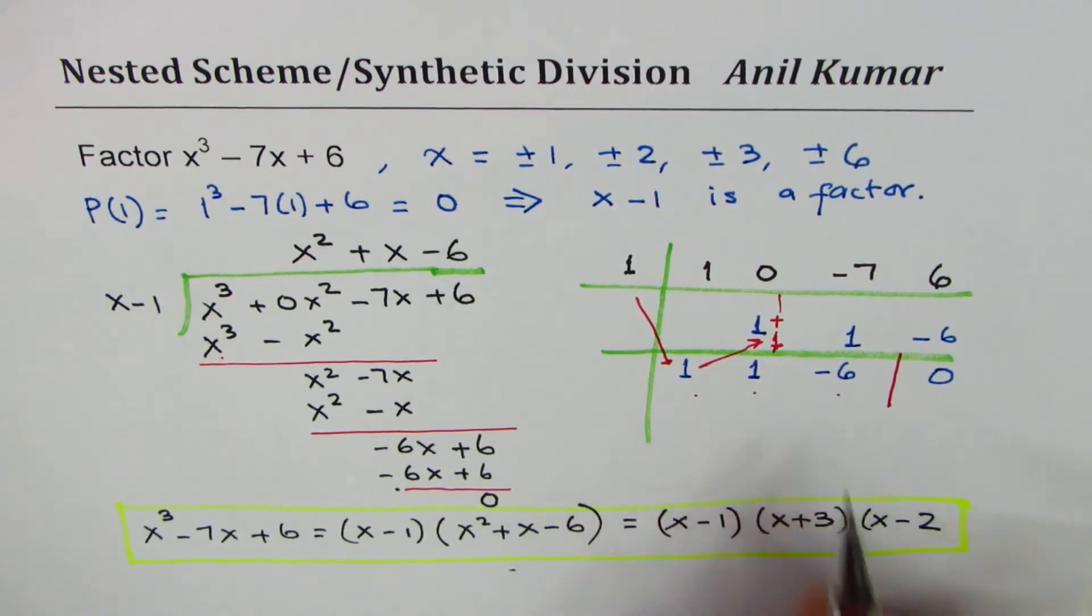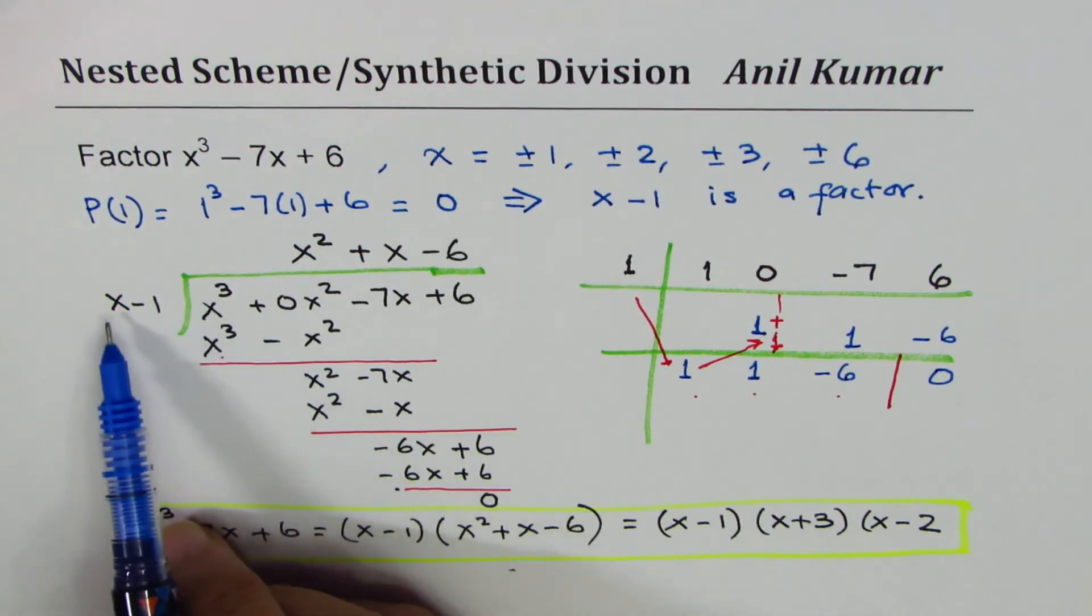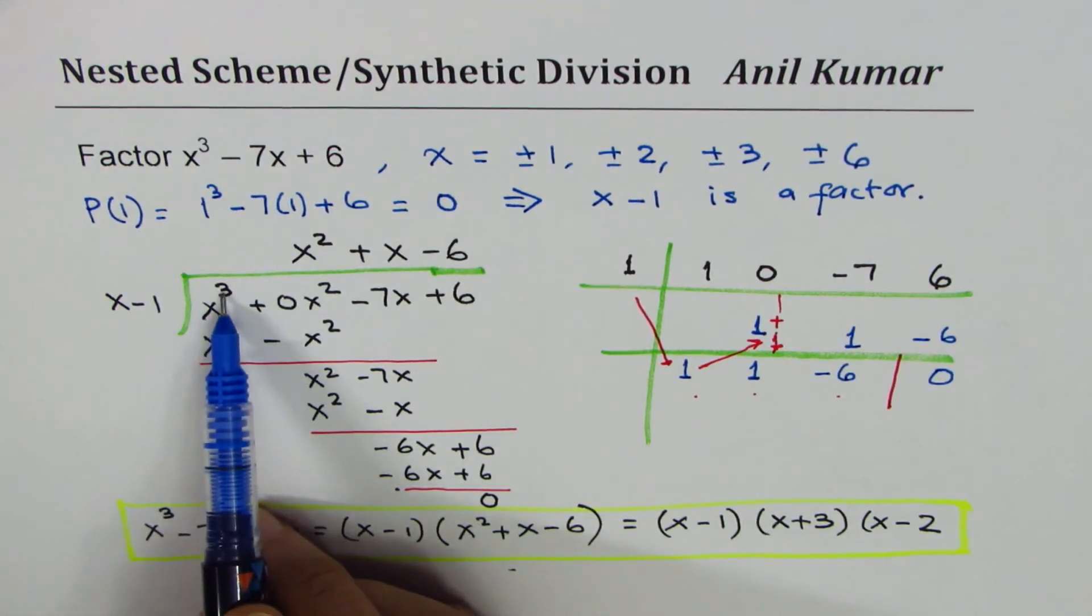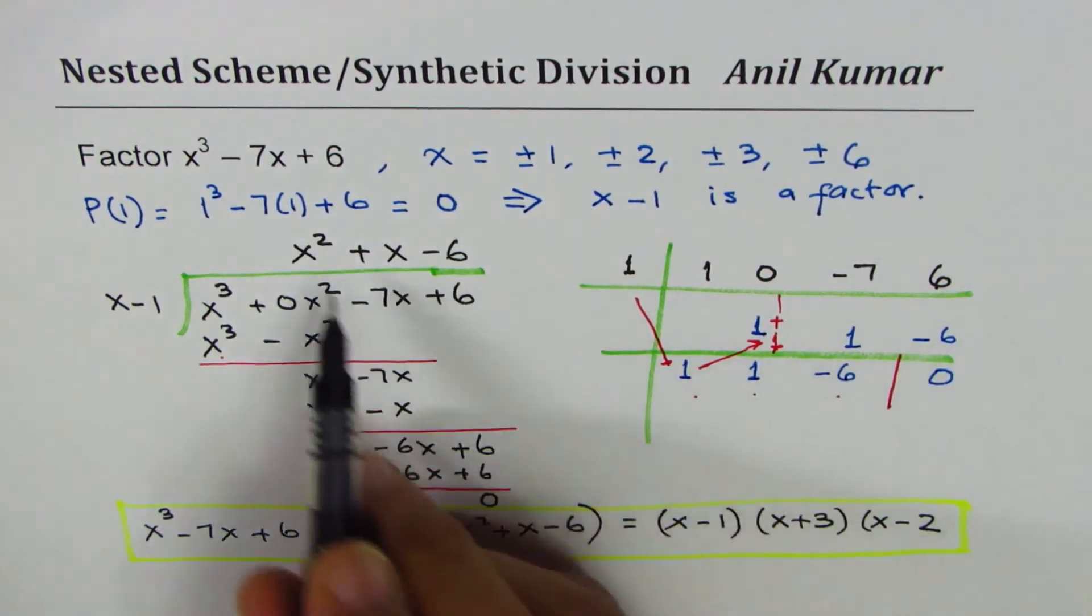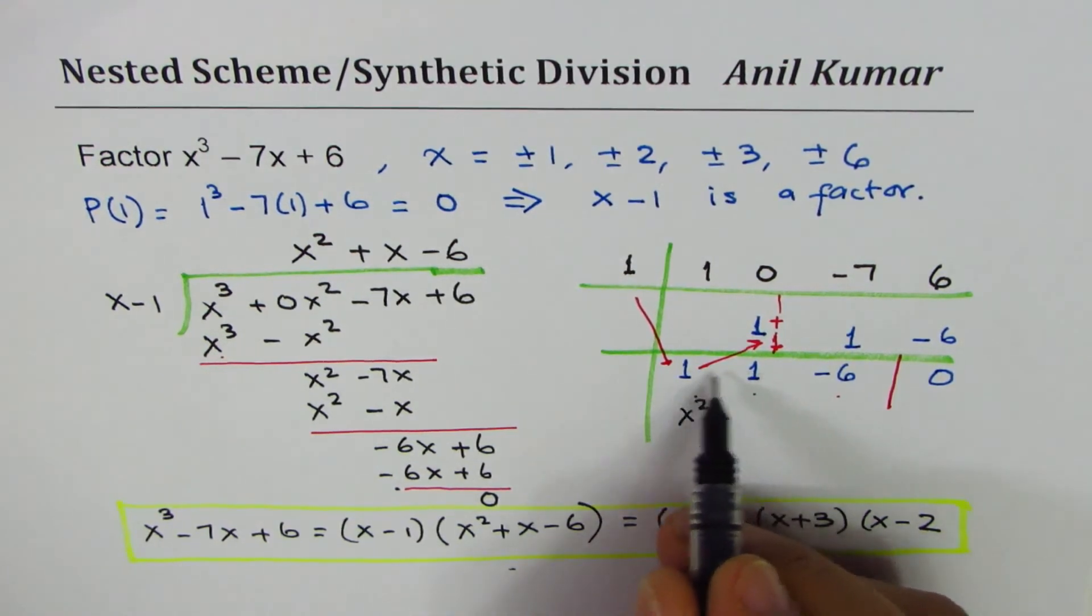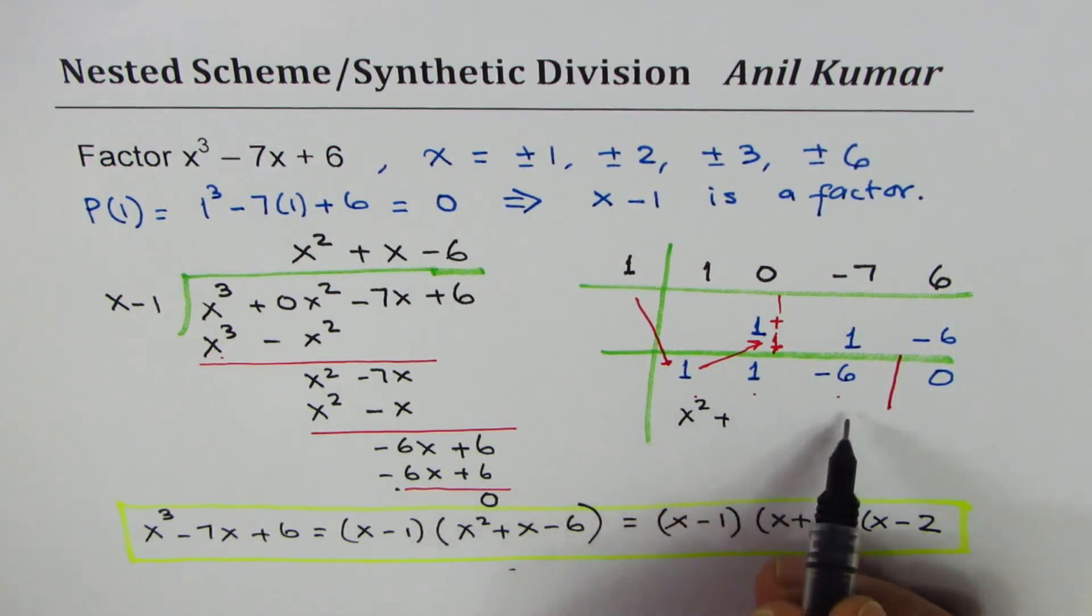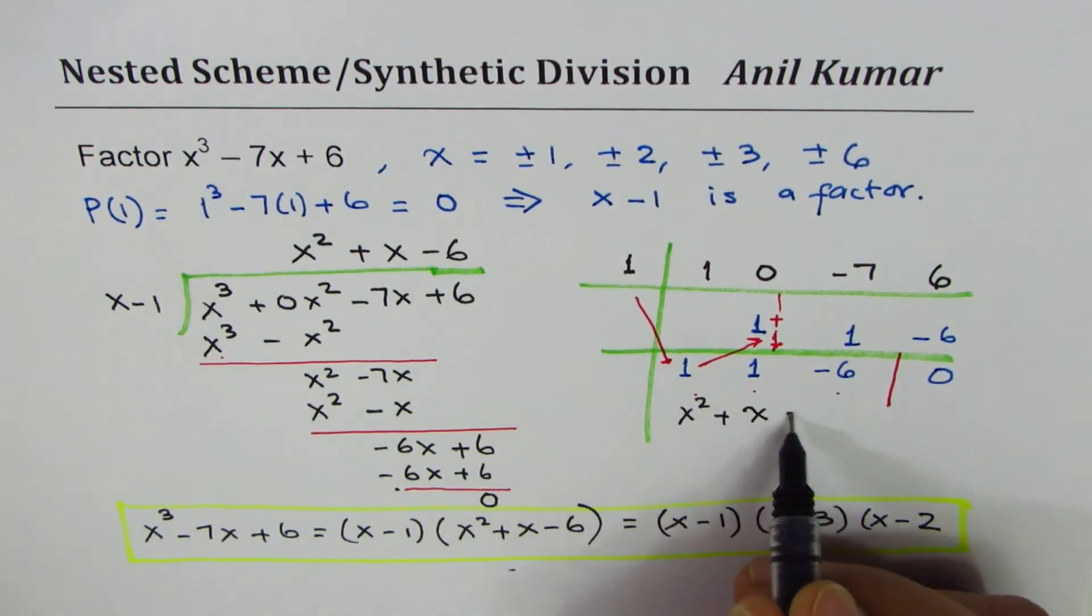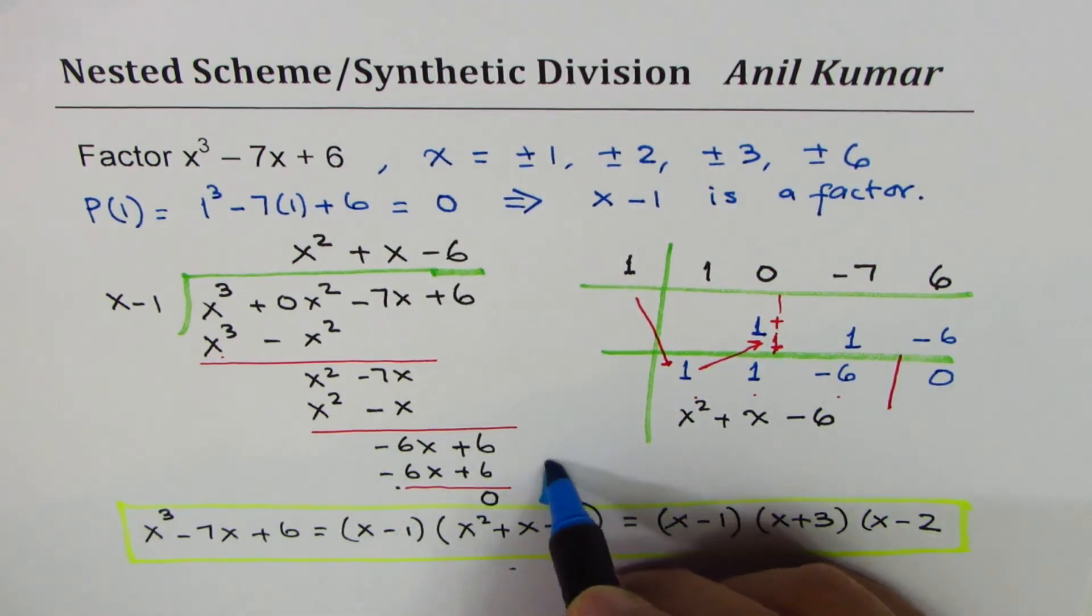So these are the coefficients. Since the degree of divisor is 1, dividend is 3, quotient should be 2. So we could write from here the quotient, which is x square plus, these are the coefficients of places with degree 2, 1, and 0, so we get x square plus x minus 6. Do you see we got the same result as we got earlier? So it's a much shorter and efficient way of doing.